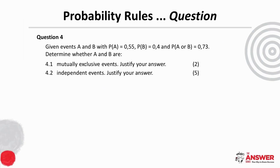For question 4, we have to determine whether A and B are mutually exclusive and/or independent events given the following information. Pause the video to read the question through and give the solution a try.